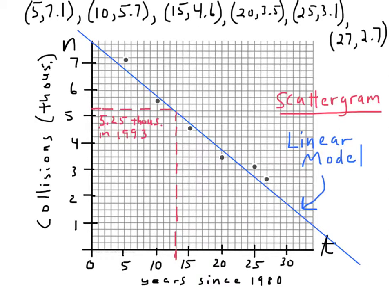Now, we can also make predictions going the reverse direction. For example, let's say we wanted to estimate in what year were there 4,000 collisions. So, we'd locate 4 on the vertical axis, and then we would go over until we hit the curve, and then we'd go down to see where that touches. And it looks like it hits at 19.